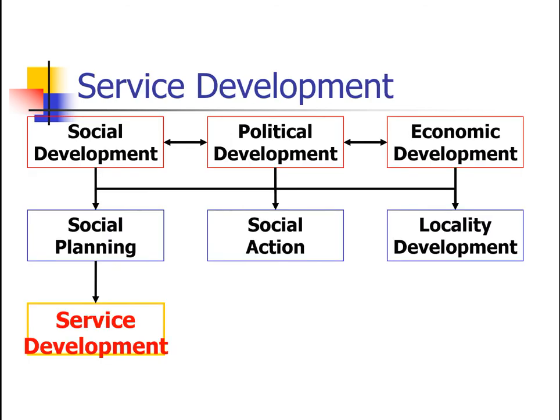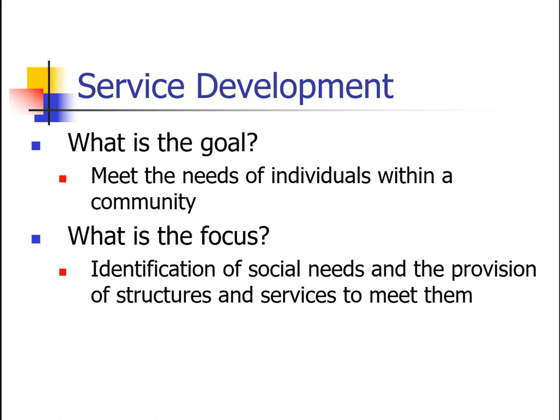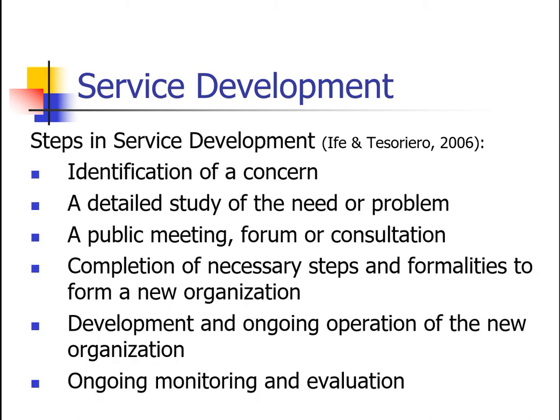The first strategy is service development, which I've put logically under social planning because one of the goals of social planning is often service development. Service development involves the identification of social needs and the provision of structures and services to meet them. This often involves a six-stage process. First is the identification of a concern or issue among service providers or in the community at large — for example, maybe there's a lack of recreation facilities for youth, loneliness among older adults, or increased vandalism.